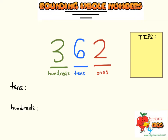So for example, if we're rounding to the tens place, this is going to be the last non-zero number. We're going to need to look if the digit is greater than 5 or less than 5. If it's greater than 5, we're going to round up. If it's less than 5, we're going to round down. That's all you really need to remember.